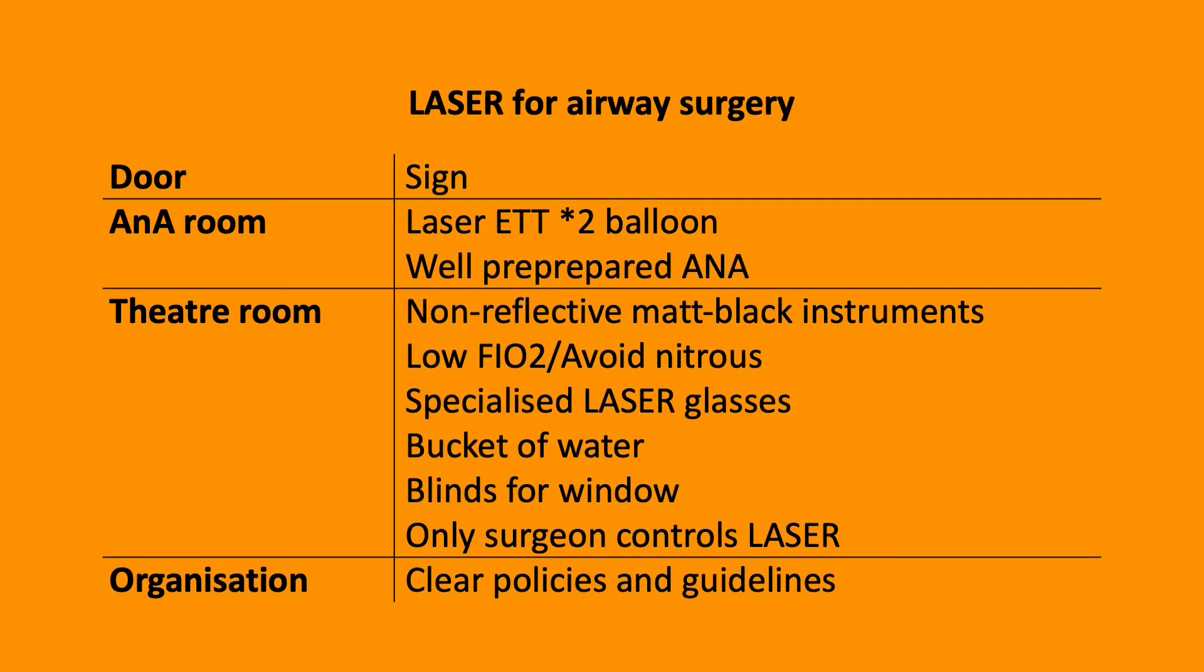Safety considerations for the use of laser for airway surgery. First of all, on the door to theatre, there should be a sign. Within the anaesthetic room, you should have a well-prepared anesthetist using laser tubes. Laser tubes are tracheal tubes constructed of a flexible stainless steel spiral with two cuffs filled with saline which acts as a heatsink. In some instances, you can add methylene blue which makes it visible if the cuffs split.